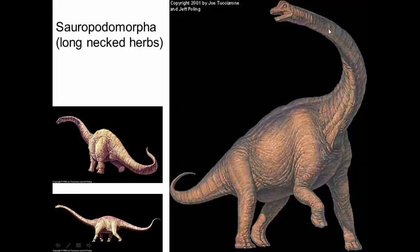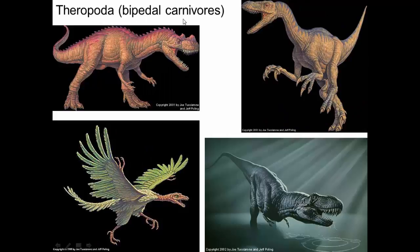Then there's Theropoda — theropod dinosaurs are bipedal carnivores: Tyrannosaurus, Deinonychus, Allosaurus, and in fact Archaeopteryx. When you look at Archaeopteryx without feathers, it basically looks exactly like one of these carnivorous theropods. Birds evolved from within theropod dinosaurs, so birds are essentially modern remnants of what used to be bipedal carnivorous dinosaurs.